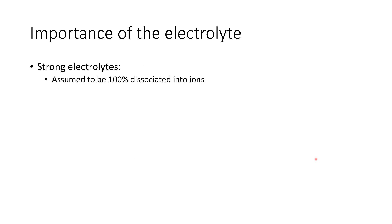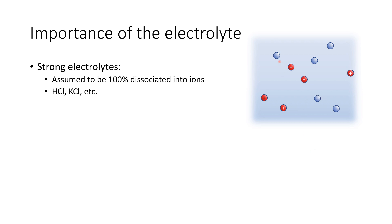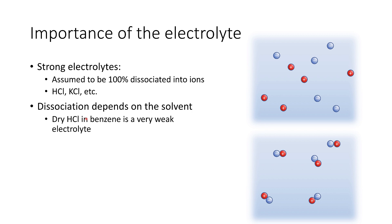The electrolyte itself is extremely important. When we think of strong electrolytes, we assume them to be 100% dissociated into ions — HCl, KCl, and so on. But the degree of dissociation depends on the solvent. If we consider something like dry HCl in benzene, a very non-polar solvent, HCl will tend to clump together as ion pairs. Ion pairs have a net charge of zero, so when we apply a potential difference, no current flows.